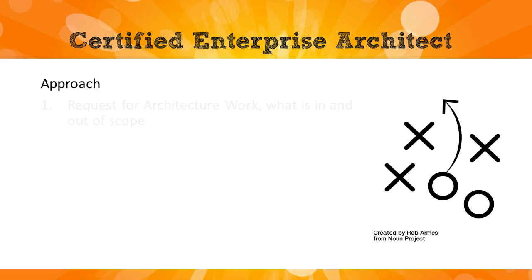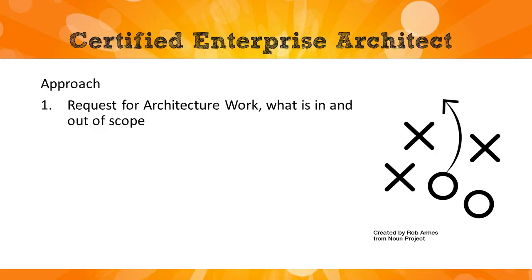The approach: number one is to create the request for architecture work, which is going to define what is in and what is out of scope. If you don't define the scope, or if you define it too broadly, you're basically taking on a massive project to define the baseline and target architectures in one huge scoop. Especially if you're starting off with very low architecture capability, the scope definition is really what's going to get this project to succeed.